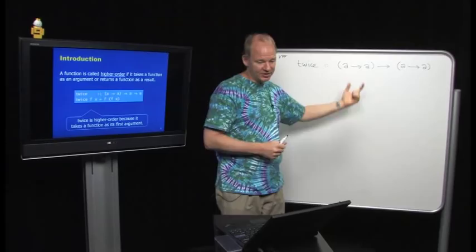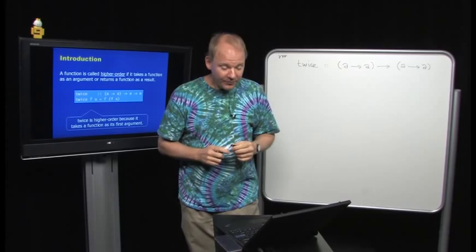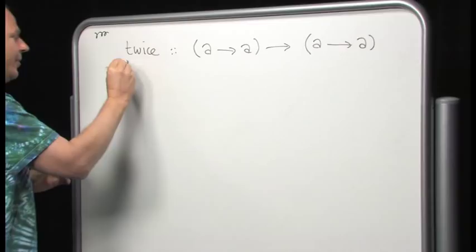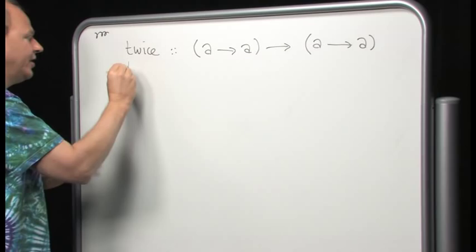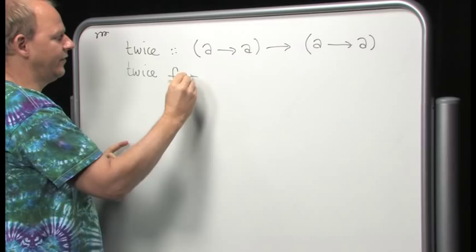`twice` is defined as follows: `twice f x = f (f x)`. We can write this even shorter as `twice f = f . f` — that is, f composed with itself.